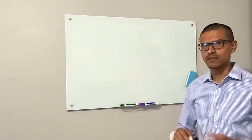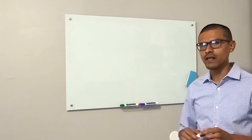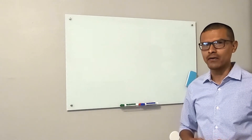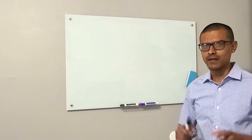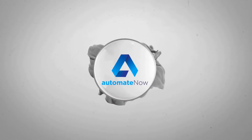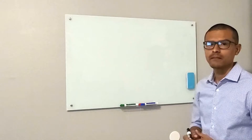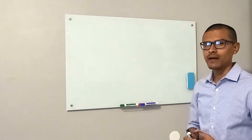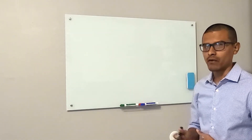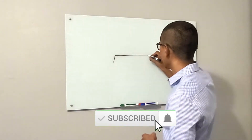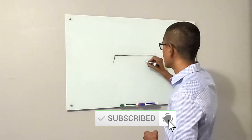In this video I'm going to show you how to click a specific area of an element using Selenium WebDriver. You're watching Automate Now. To begin, I would like to draw an element that we may come across, and it will look something like this. This is called a slider.